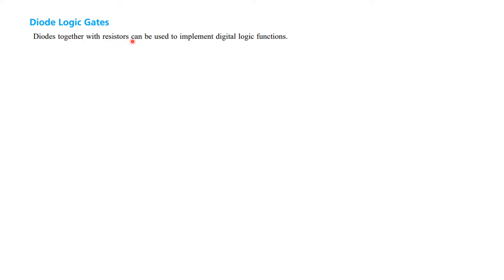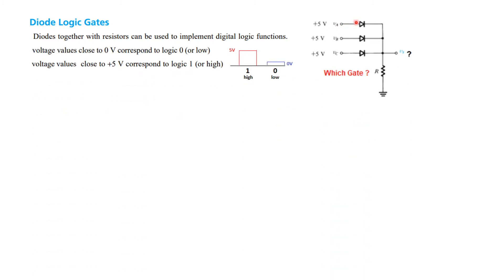Diodes together with resistors can be used to implement digital logic functions. As shown here, there are diodes and resistors. The question we are going to answer is which gate is this representing. Voltage values close to 0V correspond to logic 0 — so 0V, 1V, sometimes up to 1.3V or 1.5V are all considered 0. And any voltage close to 5V will be considered as logic 1 or high level.